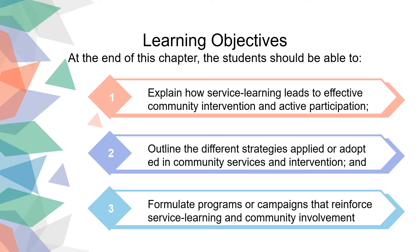The learning objectives of this topic: at the end of this chapter or topic, the student should be able to: 1) Explain how service learning leads to effective community intervention and active participation. 2) Outline the different strategies applied or adapted in community services and intervention. And 3) Formulate programs or campaigns that reinforce service learning and community involvement.